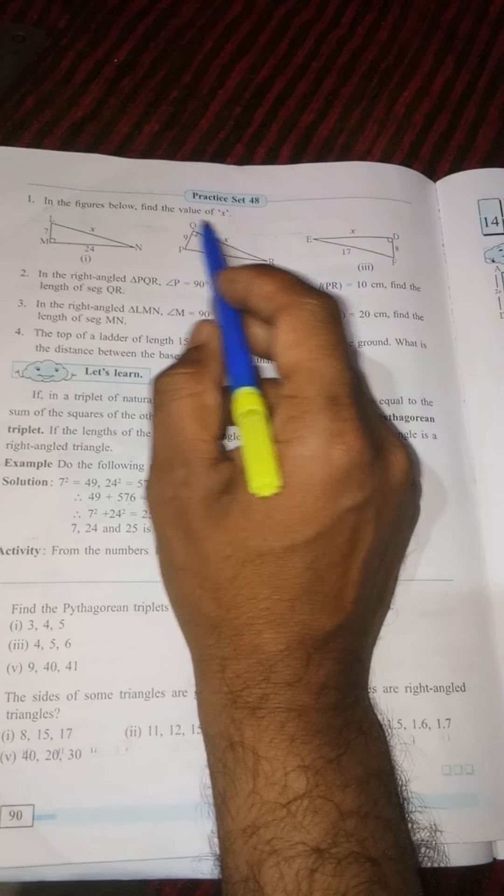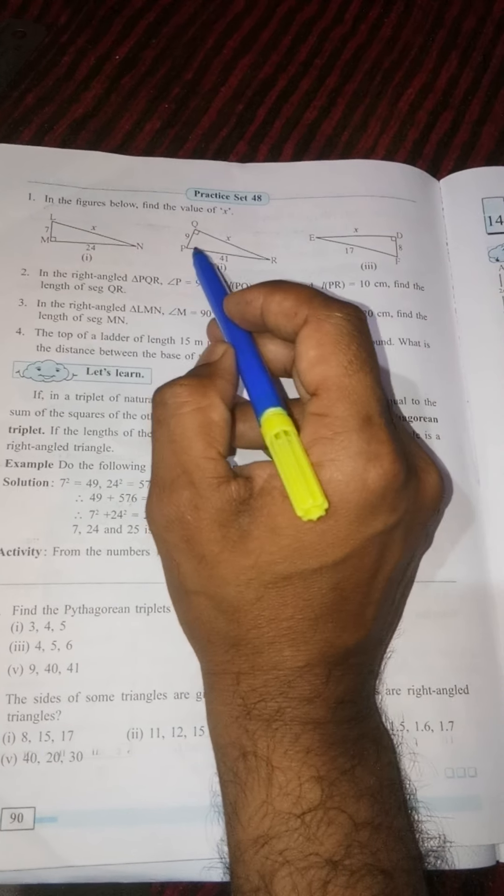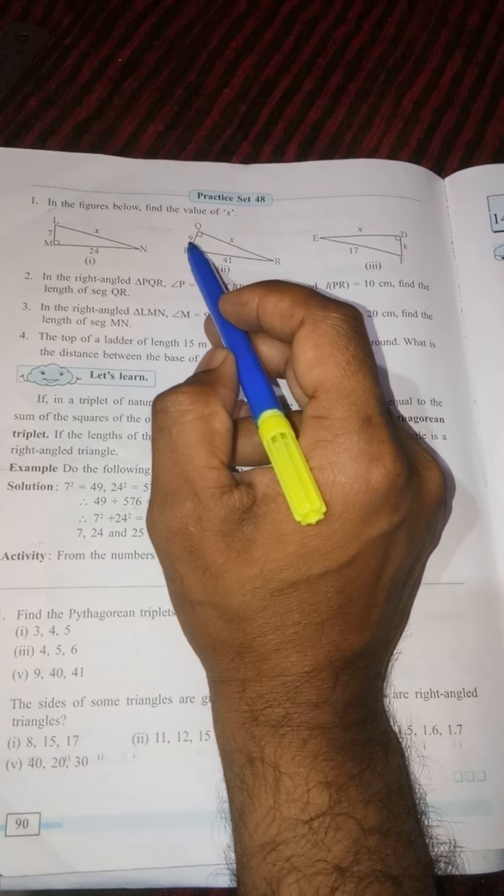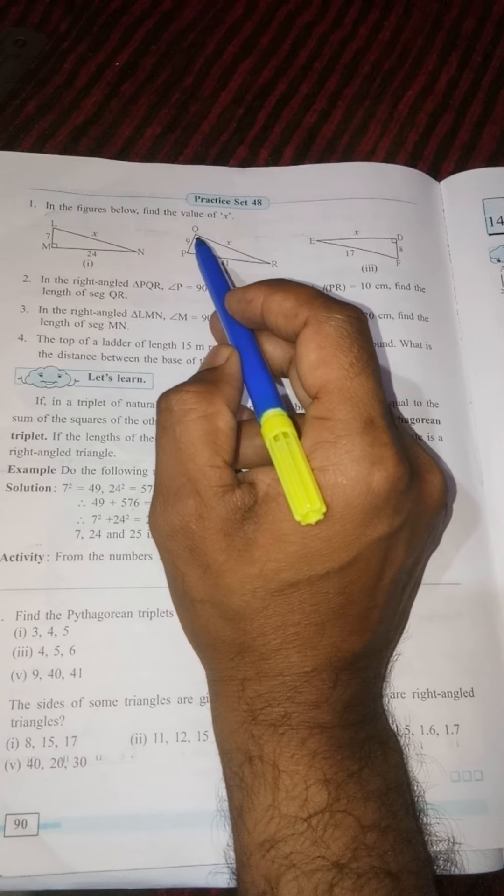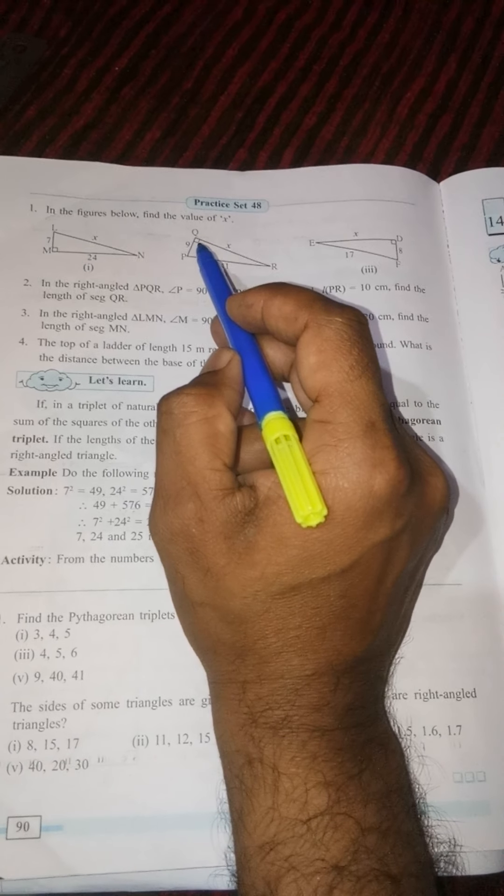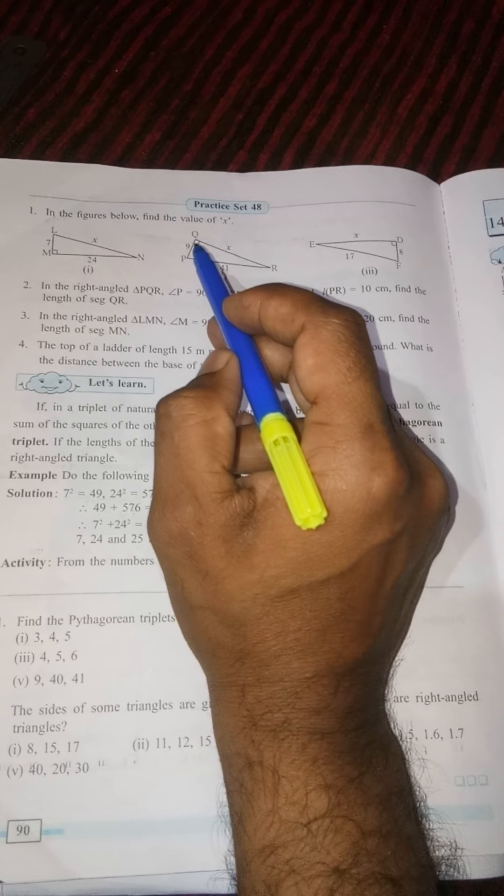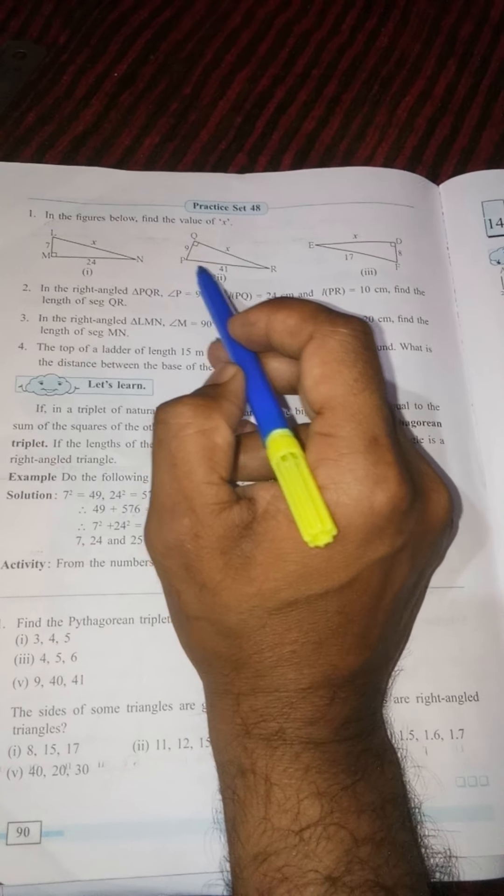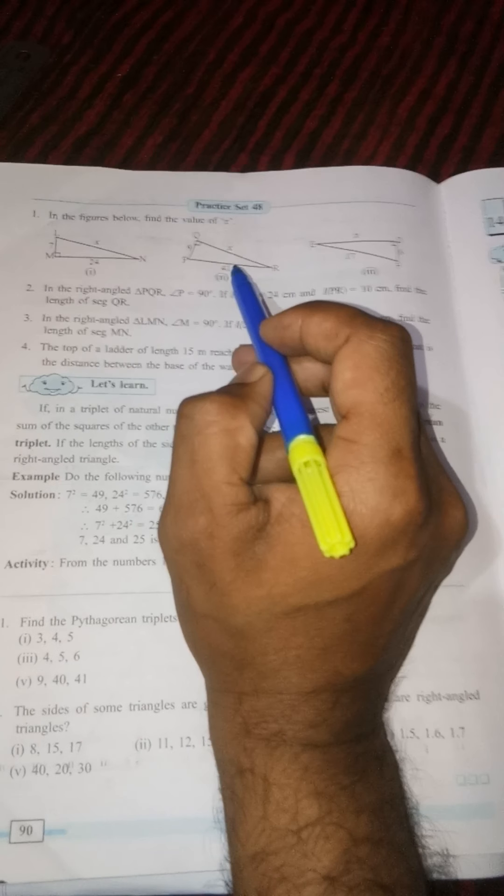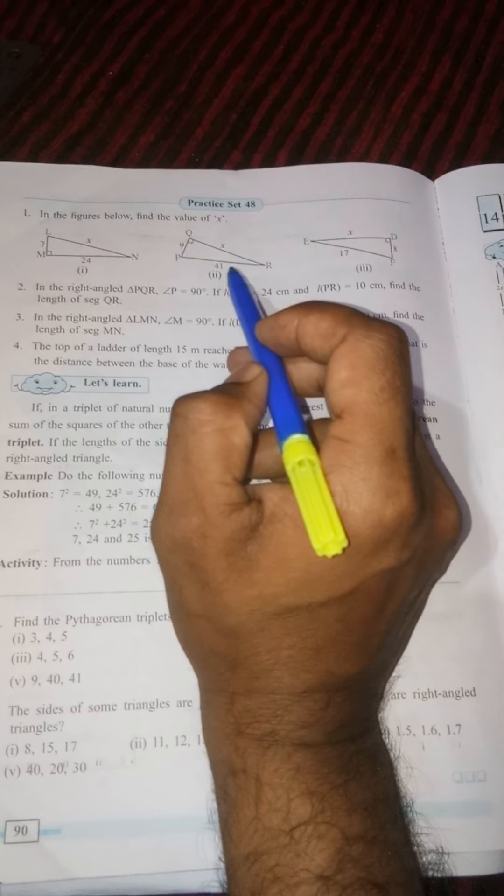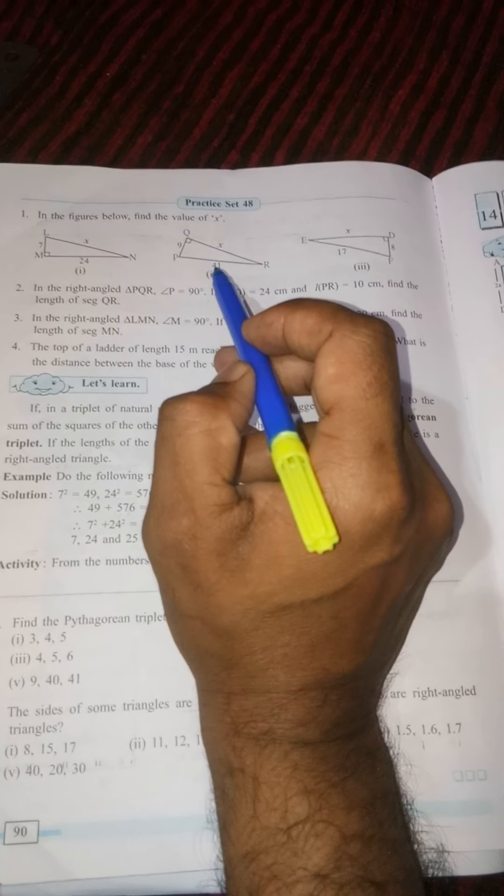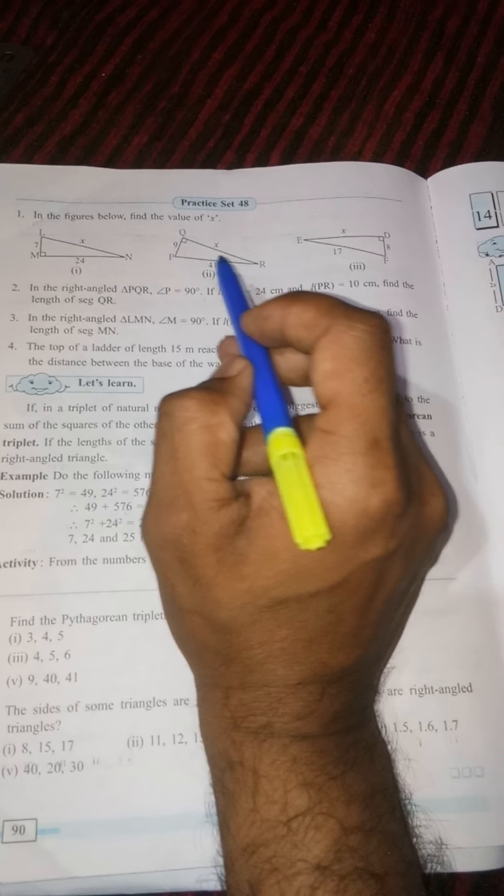Again we have to find the value of x from the given figure. Here PQ is the base. At point Q you can see the right angle symbol, and opposite to the right angle is the hypotenuse, so PR is our hypotenuse with 41 units.